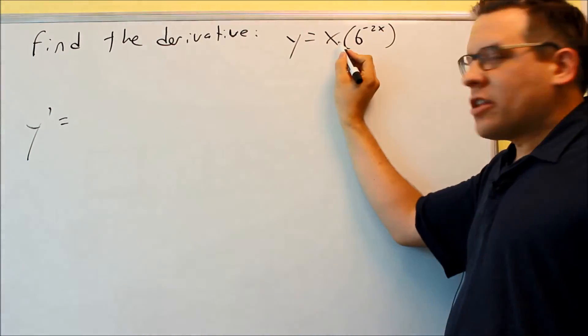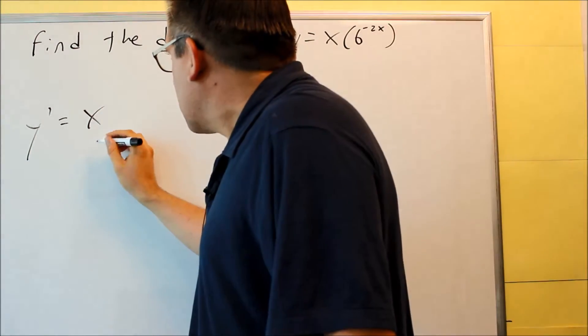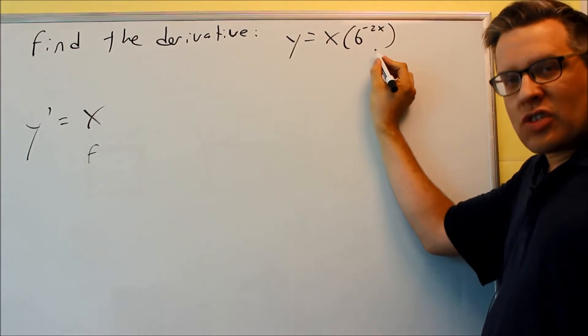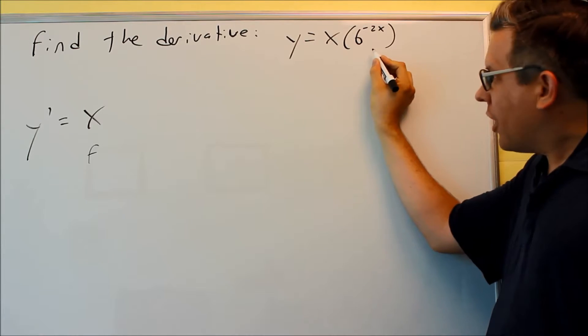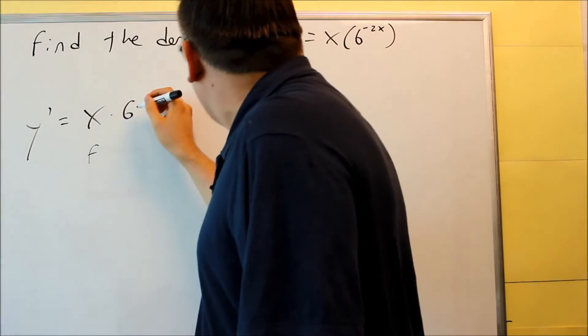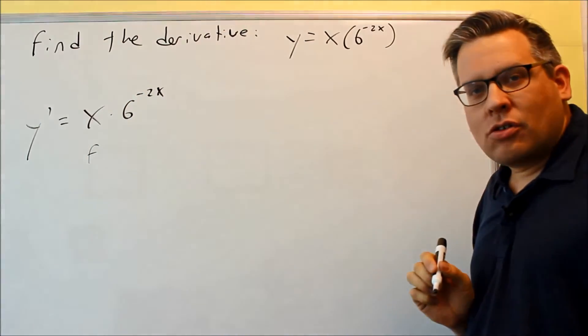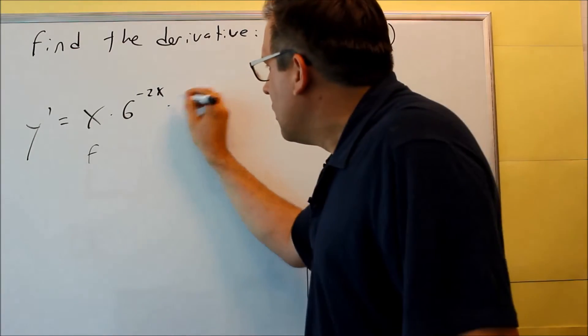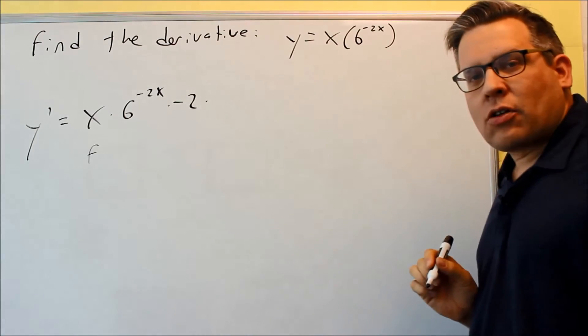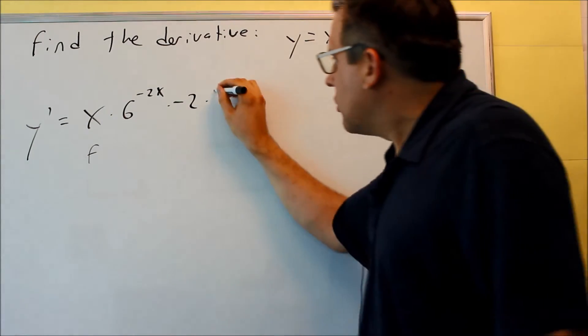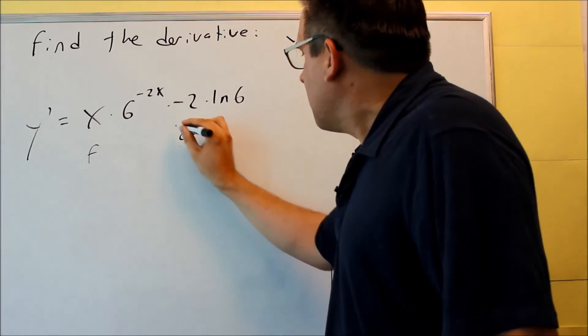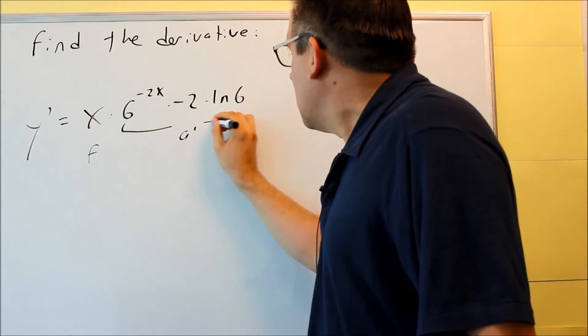The product rule says you take the first thing, that's x, I'm going to label these for you as we go through, so that's our f, that's the first thing, times the derivative of the second, so this is our g prime we're doing now. This is our a to the u that we have to do, so to do that, you're going to do 6 to the negative 2x, that's a to the u. The next thing is the derivative of the exponent, so the derivative of negative 2x is negative 2, and then after that you have to put natural log of the base, which in this case, base is 6. So this whole thing here is the g primed.